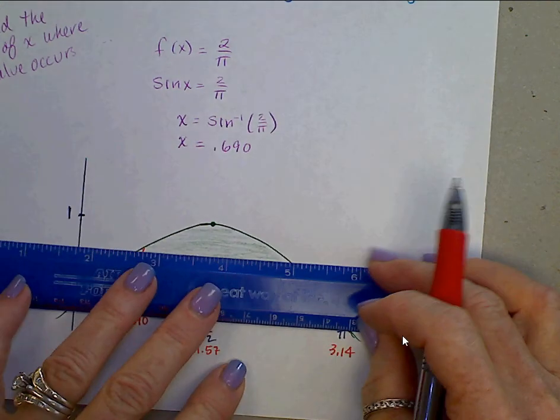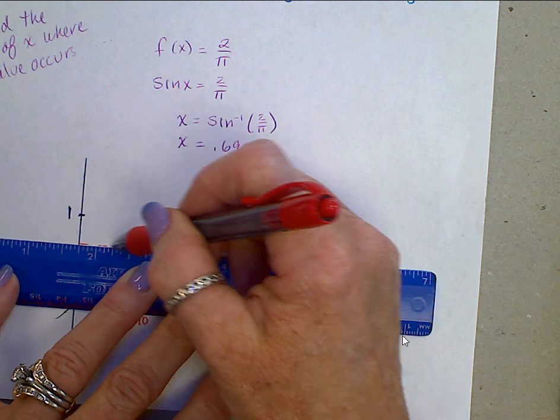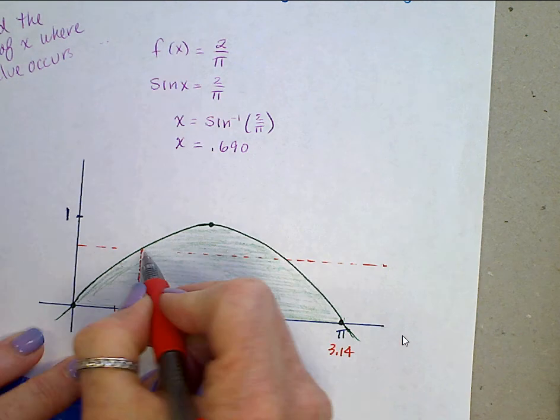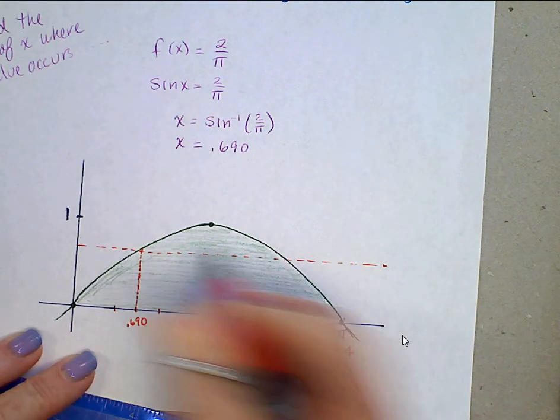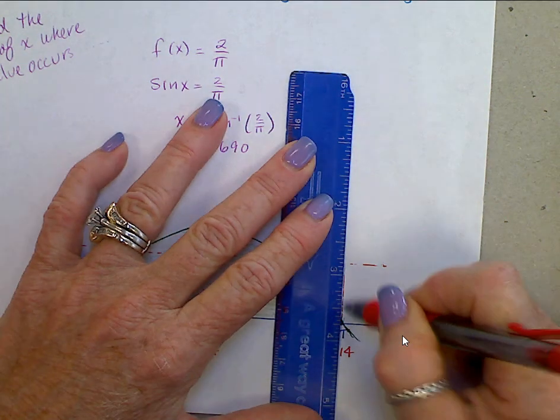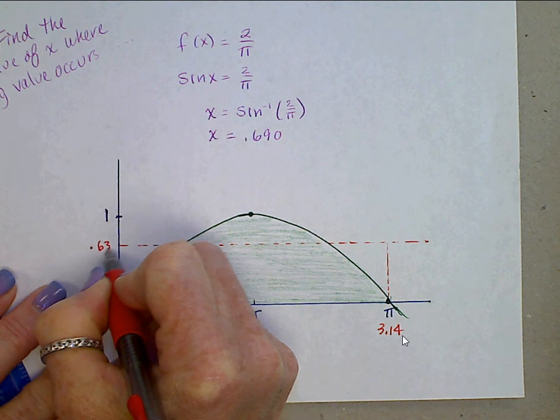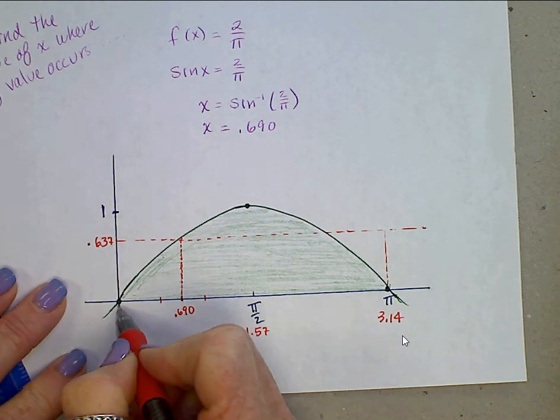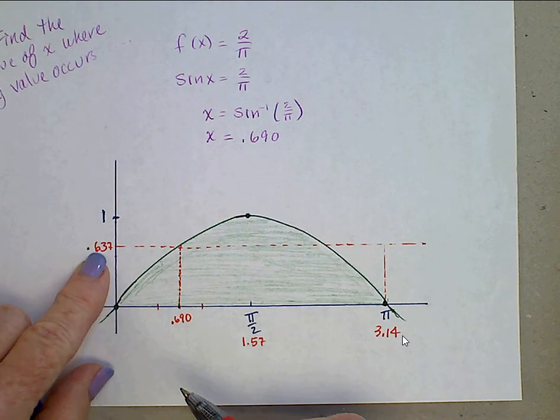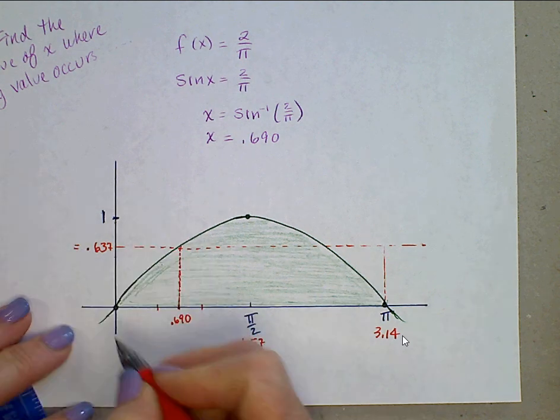That height, then. On this same interval from 0 to pi, so here would be the average value, 0.637. That's pretty close. 0.5 is probably right about there, so 0.637, that's pretty darn close. That is the average value.